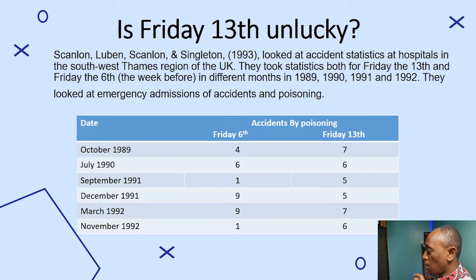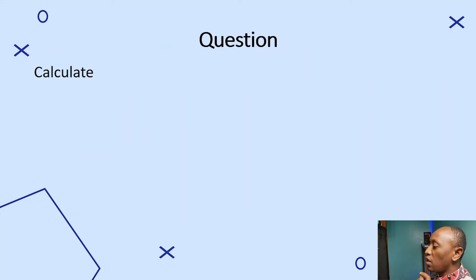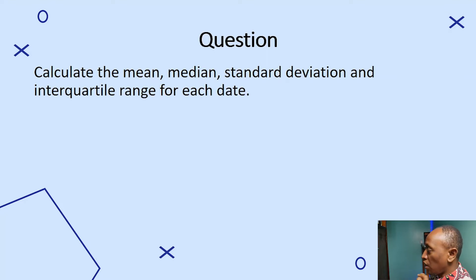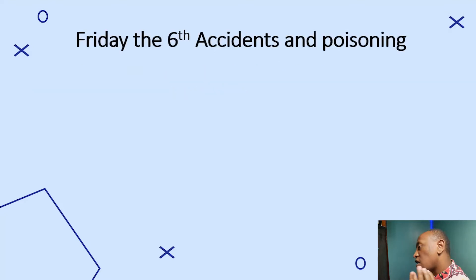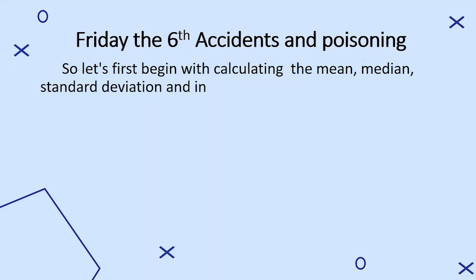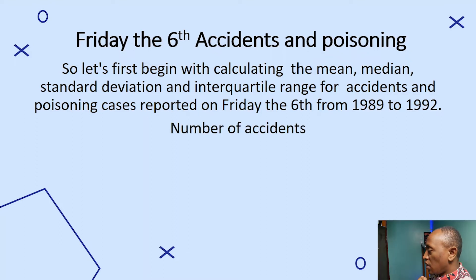The question is: calculate the mean, median, standard deviation, and interquartile range for each date. Let's begin with calculating these statistics for accidents and poisoning cases reported on Friday the 6th from 1989 to 1992. The numbers of accidents are 4, 6, 1, 9, 9, and 1.